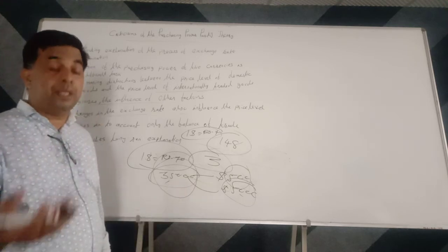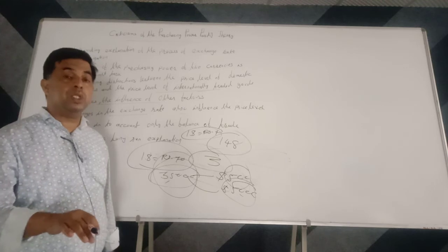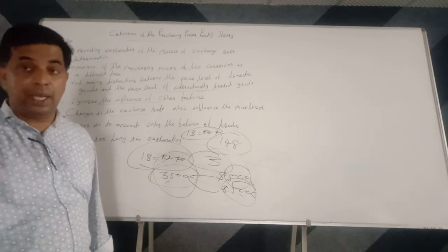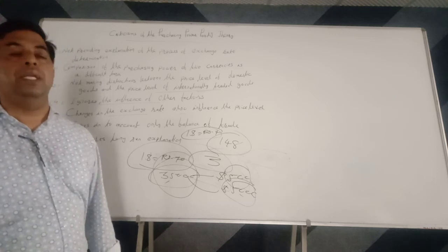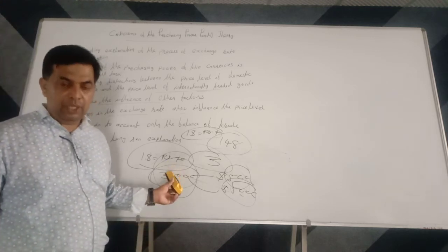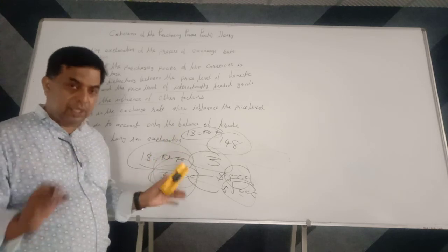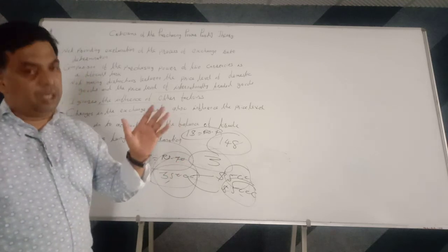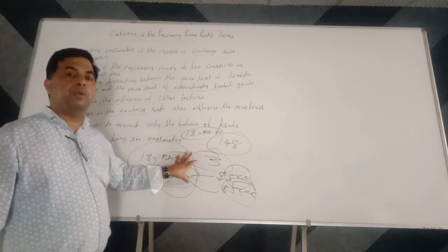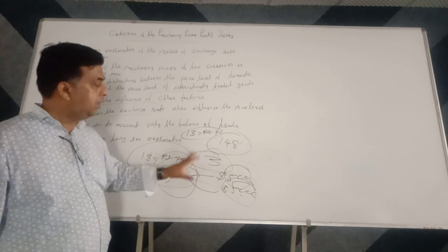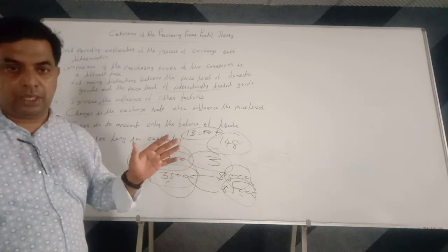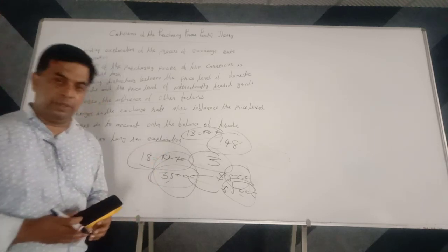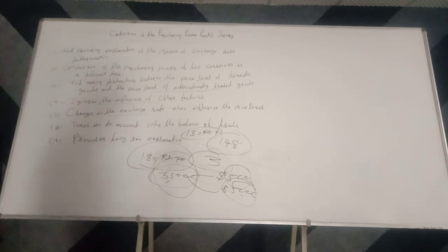The Human Development Index can be calculated on the basis of real per capita income or GNP per capita income as per PPP — purchasing power parity. So this is the significance of this theory. In spite of all its limitations, the theory has great value, as the example shows how important this theory is. Thank you very much.